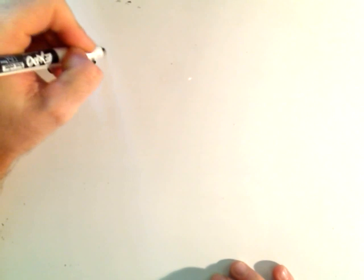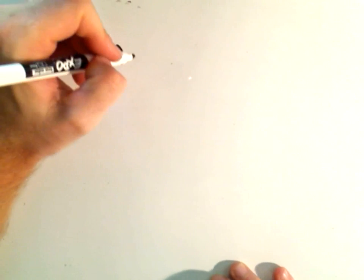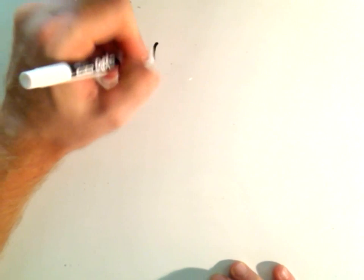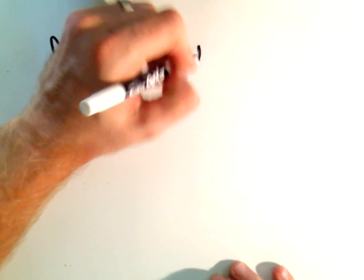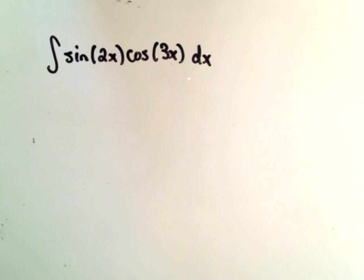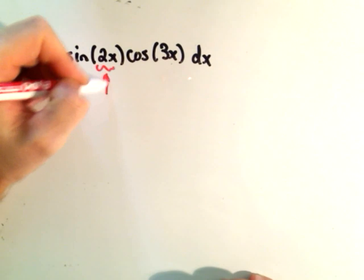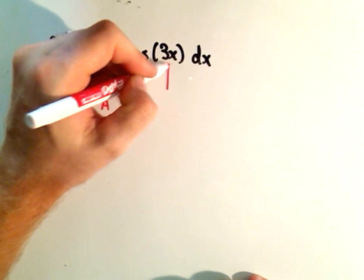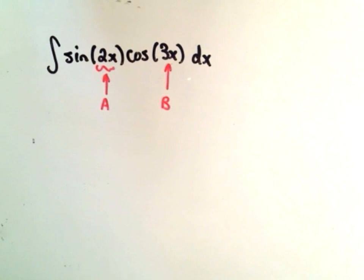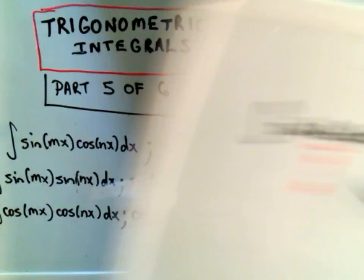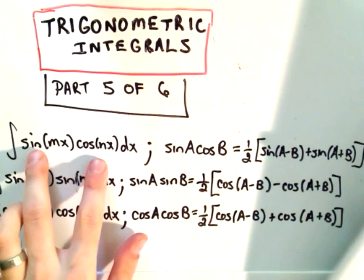Suppose it's sine of 2x times cosine of 3x dx. In this problem you should think about the 2x as being your a value, you should think about the 3x as being your b value, and we're going to use this first formula.